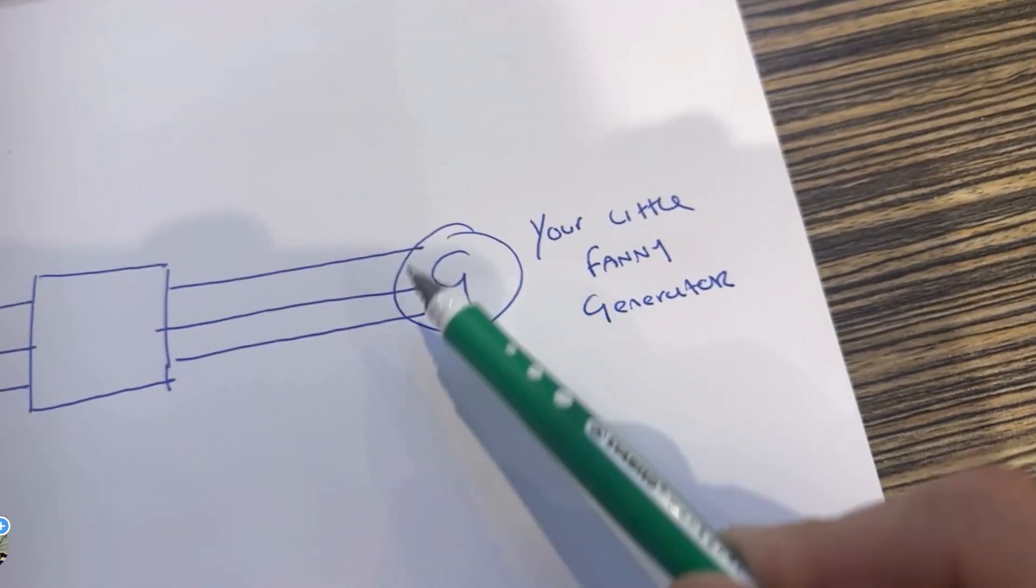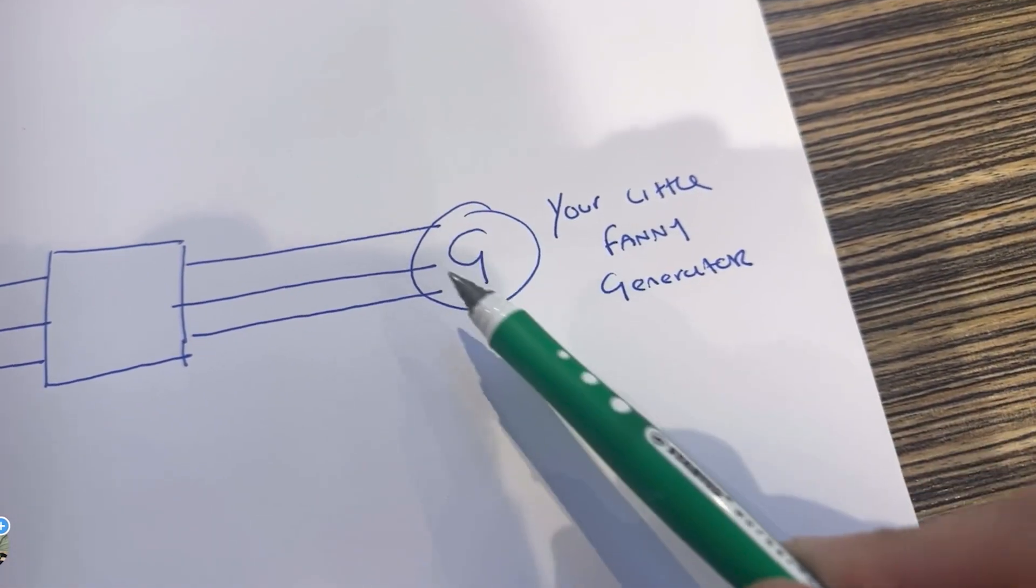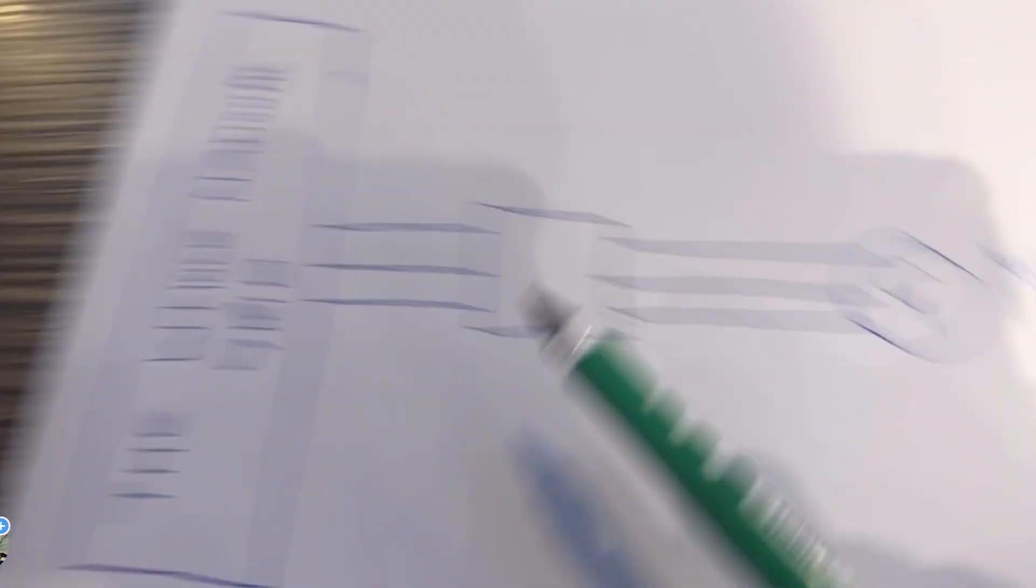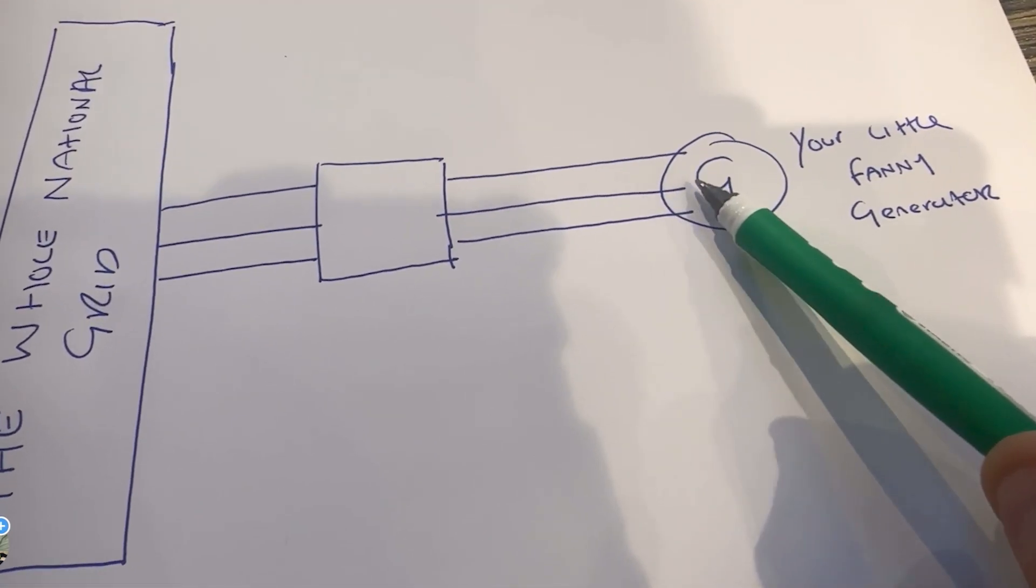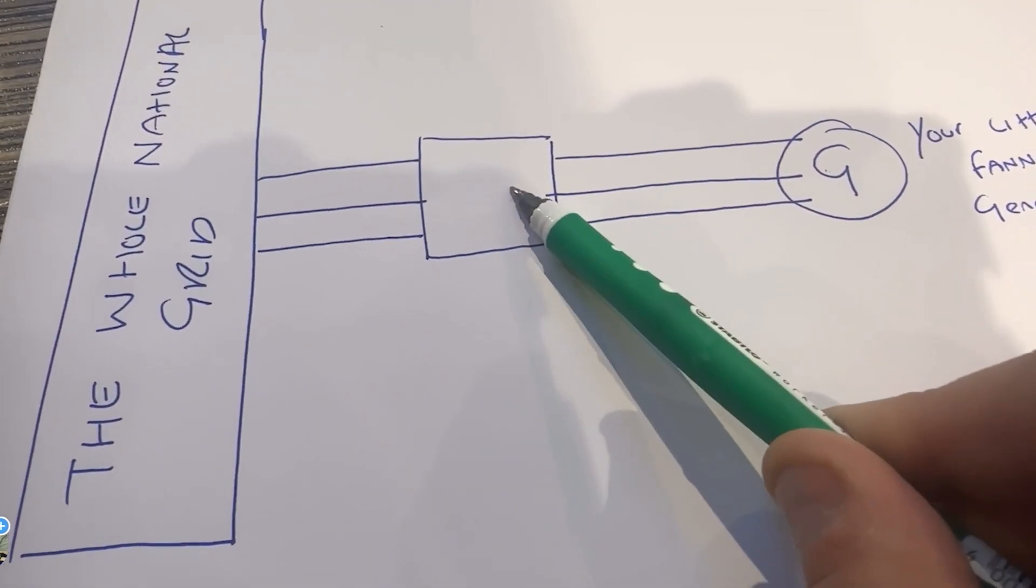In its simplest form, you have a little generator, probably massive the size of a house but it's little compared to the whole national grid. You connect your three phases from your generator through the sync breaker to the national grid.